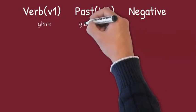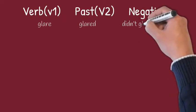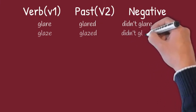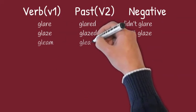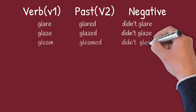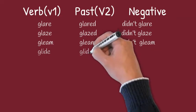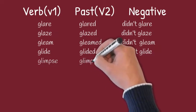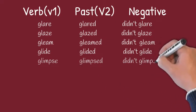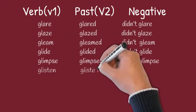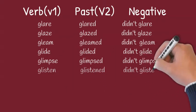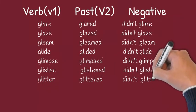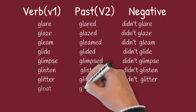Glare, glared, didn't glare. Glaze, glazed, didn't glaze. Gleam, gleamed, didn't gleam. Glide, glided, didn't glide. Glimpse, glimpsed, didn't glimpse. Glisten, glistened, didn't glisten. Glitter, glittered, didn't glitter. Gloat, gloated, didn't gloat.